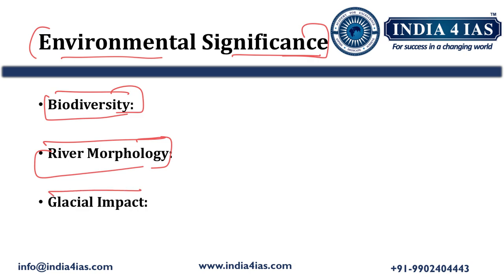Regarding the glacial impact: the Teesta is a glacier-fed river. Due to climate change and glacial retreat in the Himalayas, the river's water levels can be significantly affected. Melting glaciers due to global warming can initially increase the flow, but reduced glaciers will eventually lower water levels, impacting agriculture, hydropower projects, and drinking water supply.